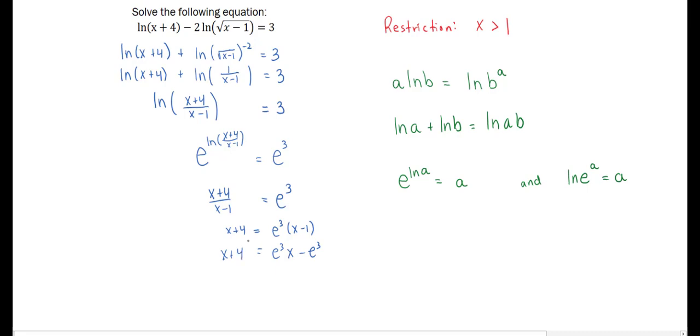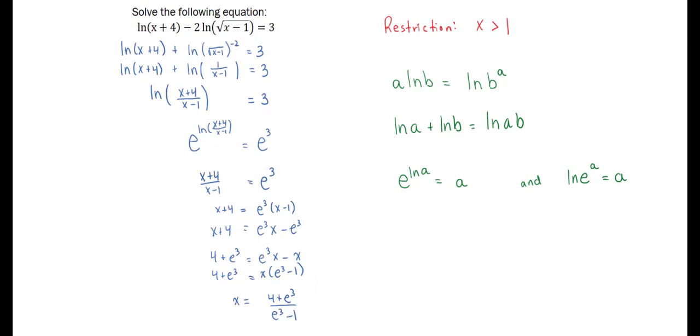All we have to do is group our like terms together. Once we have our like terms together, we can now common factor out the x, and to solve we just have to divide both sides of our equation by e cubed minus 1. So solving we get 4 plus e cubed over e cubed minus 1.